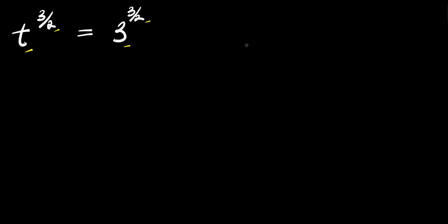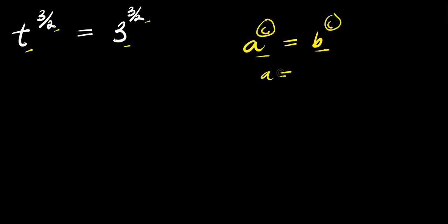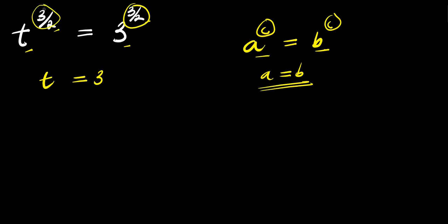If you consider this identity: a to the power of c equals b to the power of c. Since the exponents are the same, you can equate the bases. That means you can say a equals b. So if you apply the same identity here, you are going to have t equals 3, because the exponents are all the same.